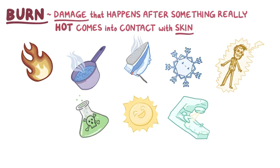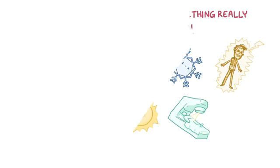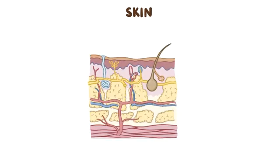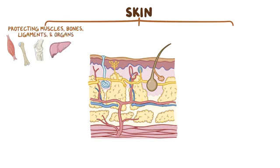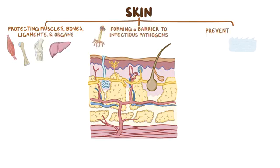Ultimately, burns cause damage and inflammation of the skin. The skin plays an important role in protecting underlying muscles, bones, ligaments, and internal organs, forming a barrier to infectious pathogens and preventing water loss from the body.